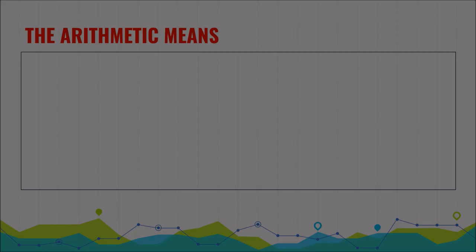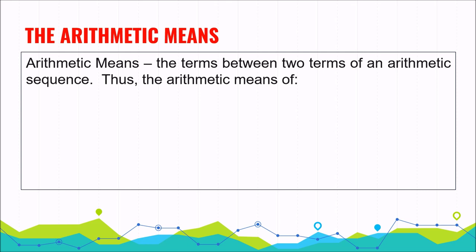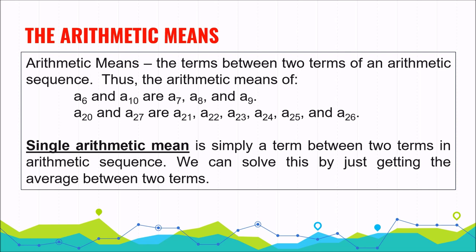Some problems in arithmetic sequence require you to find the arithmetic means. Arithmetic means are the terms between two terms of an arithmetic sequence. For example, the arithmetic means of a sub 6 and a sub 10 are a sub 7, a sub 8, and a sub 9. We also have the single arithmetic mean, which is simply the term between two terms, and it can be found by taking the average of the two terms.